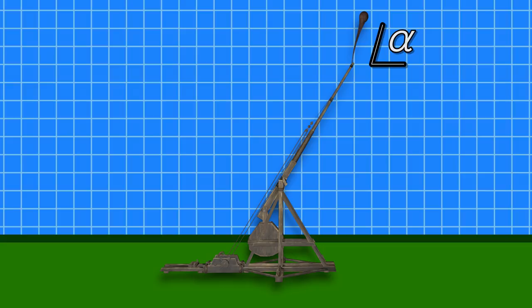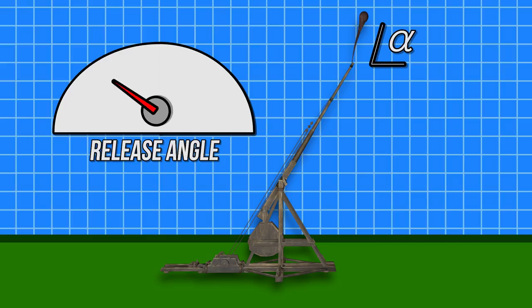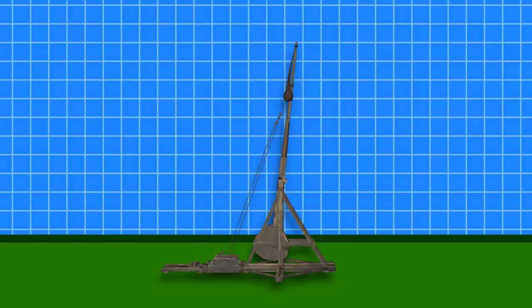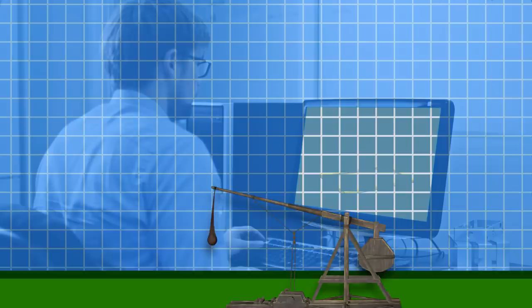No matter the weight of the counterweight, it's limited by its freefall velocity. The sling on the end of the trebuchet releases upon an angle alpha, at which point the counterweight does no more work on the projectile. You can change this release angle by adjusting the angle of the holding pin at the end of the lever arm. The more in line with the lever arm the holding pin is, the smaller the release angle alpha is.